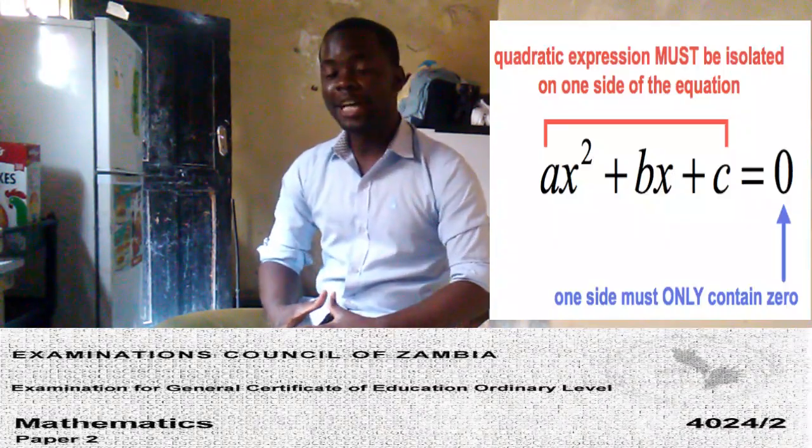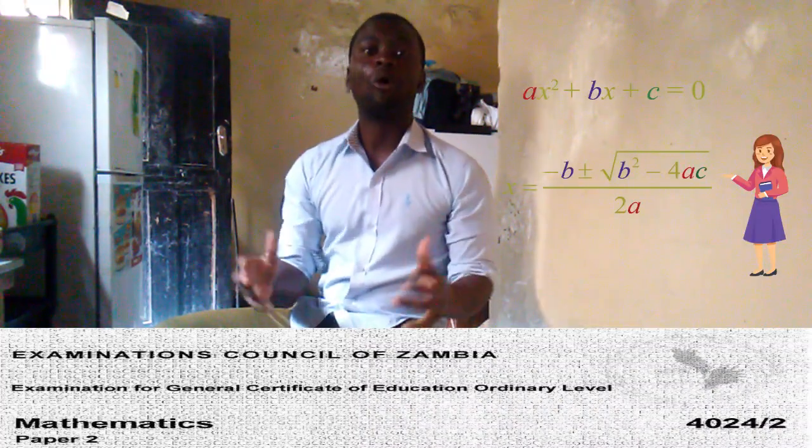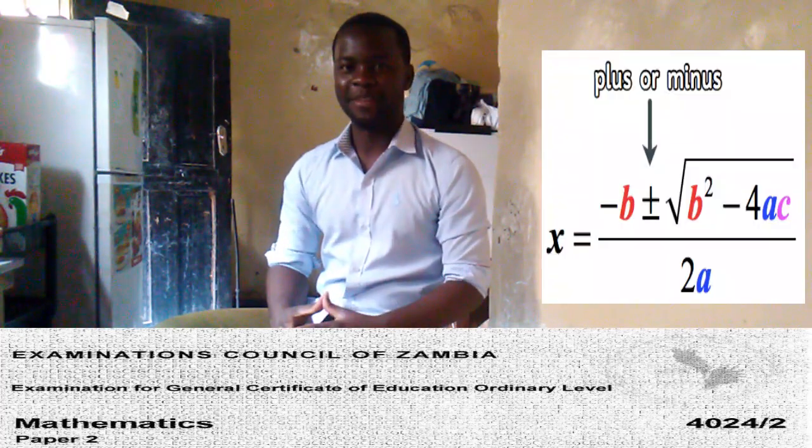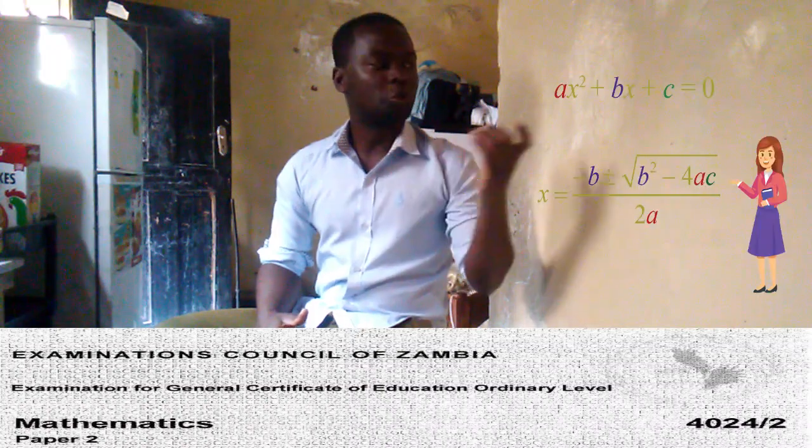Did you know that ECZ brings the same concept on quadratic equations? The calculation of a quadratic equation, where you'll be required to calculate the value of a variable — the variable can be either X, Y, Z, or whatever they bring. But the most important thing which you must know is, in that question, they want you to calculate the value of that variable using the general formula. The formula is known as the almighty formula. From there, you'll get five marks if you just know how to use this formula.